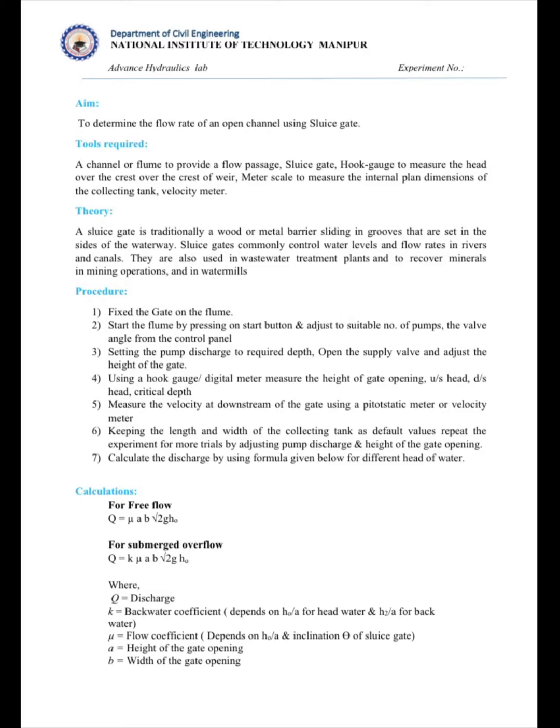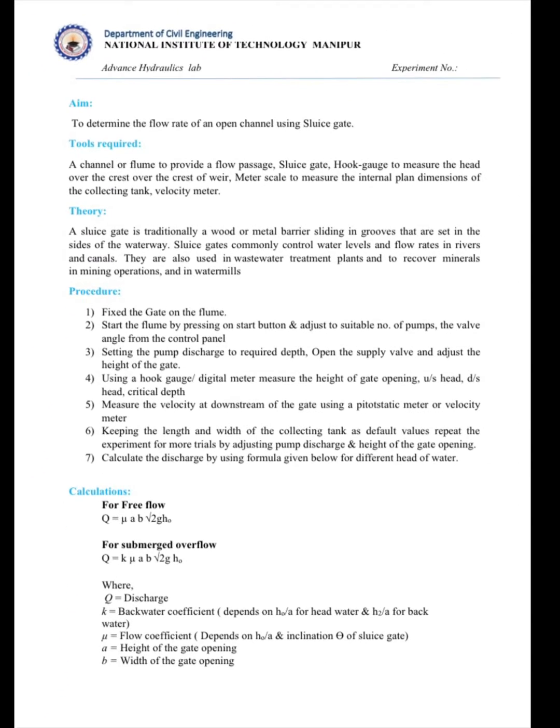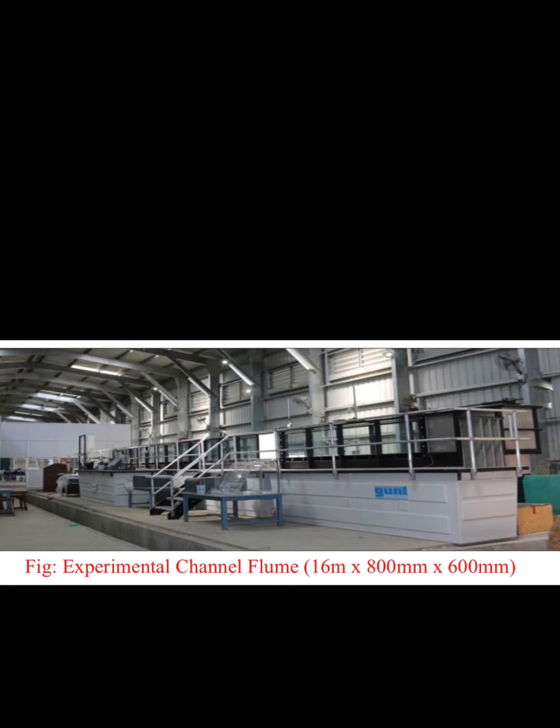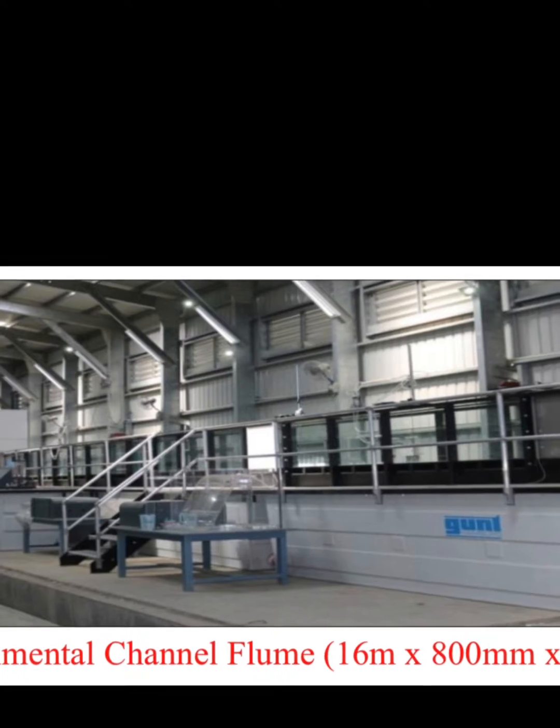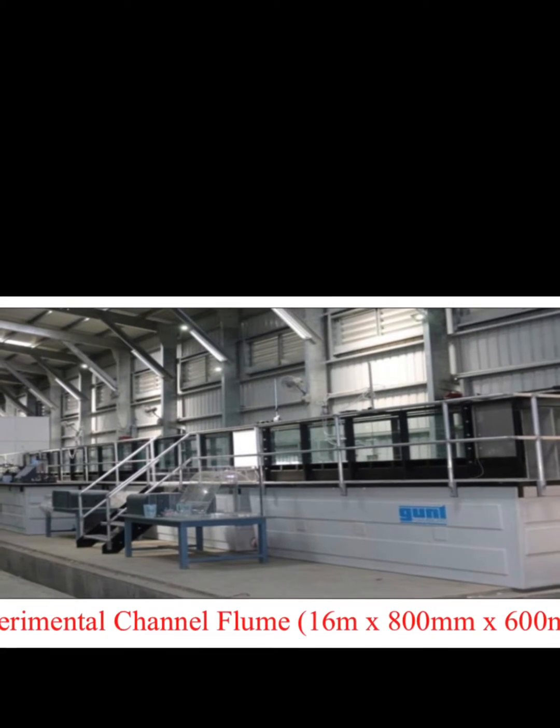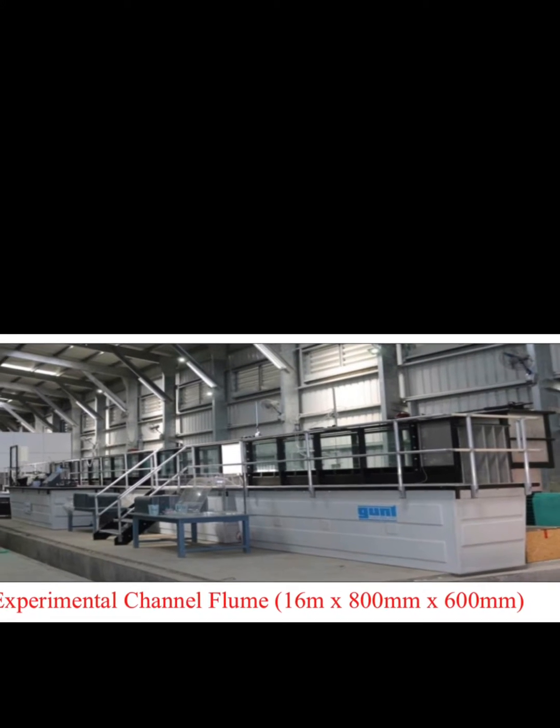In this experiment, we will determine the flow rate of an open channel using a sluice gate. This apparatus is called an experimental channel flume. All experiments will be conducted on this flume, which is 16 meters long, 800mm deep, and 600mm wide.